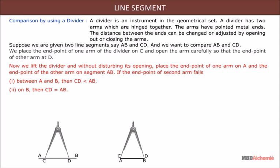If the end point of the second arm falls between A and B, then CD is less than AB. If it falls on B, then CD is equal to AB. If it falls beyond B, then CD is greater than AB.